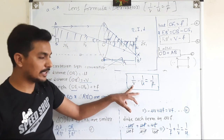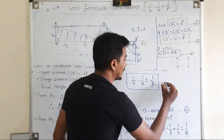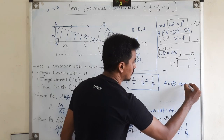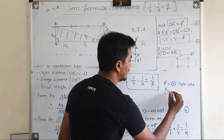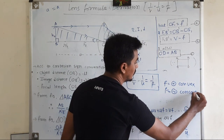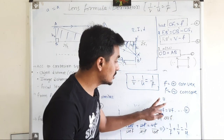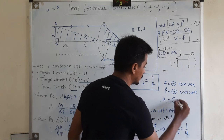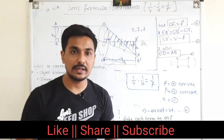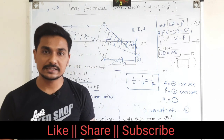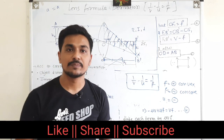This is our lens formula, where V is the image distance, U is the object distance, and F is the focal length. Remember, F is positive for a convex lens and F is negative for a concave lens. I hope you enjoyed this lecture. If you have any queries, write in the comment section. In the next lecture, we are going to discuss the numericals based on the lens formula. Have a nice day.